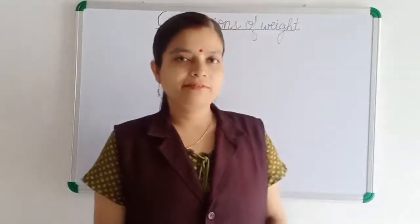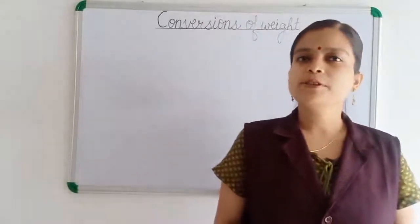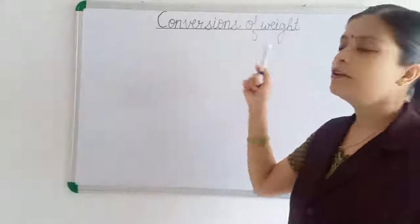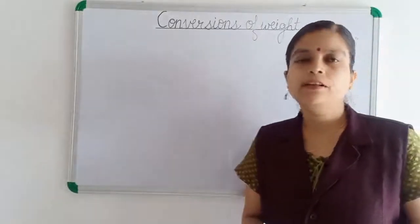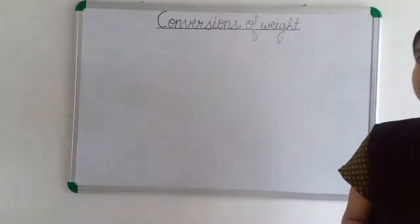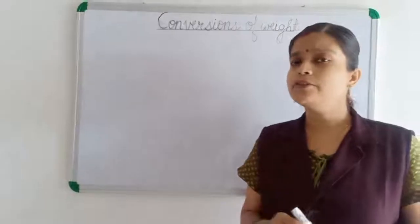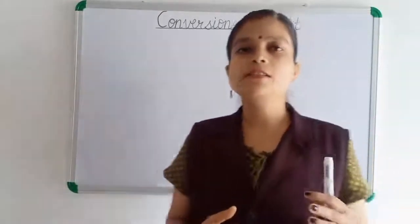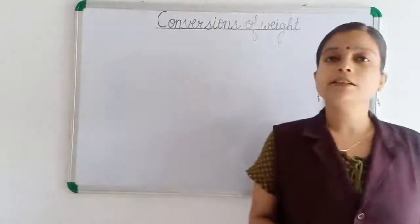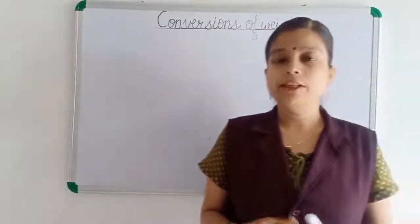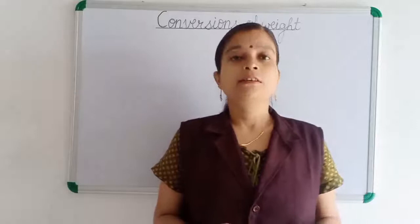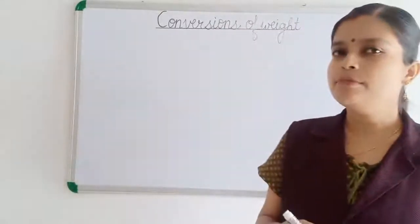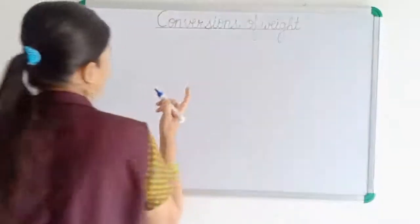Welcome to the class. Today in the chapter of measurement, we are going to discuss the topic: conversion of weight. We already know that gram is the smaller unit of weight — when we have to weigh any lighter object we use gram, and when we have to weigh any heavier object we use kilogram. So gram is the smaller unit of weight.